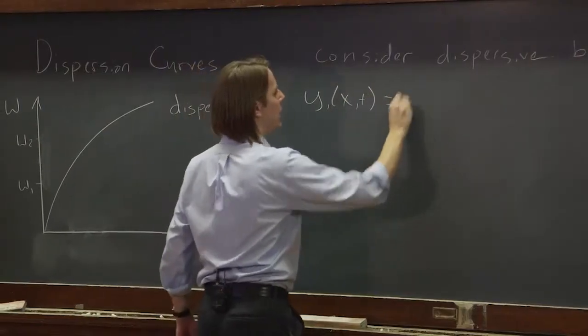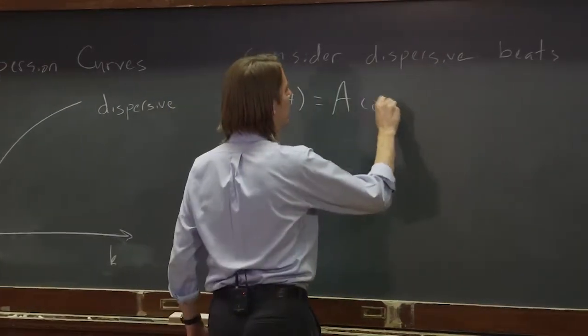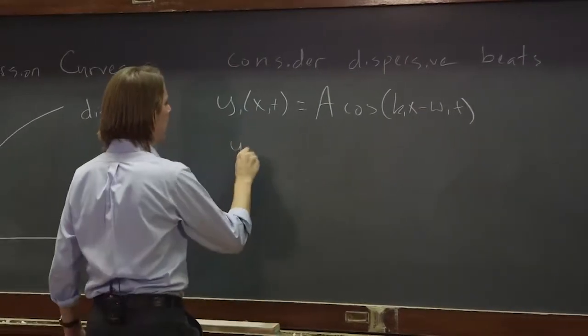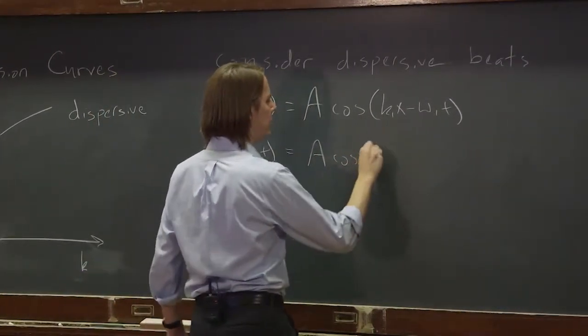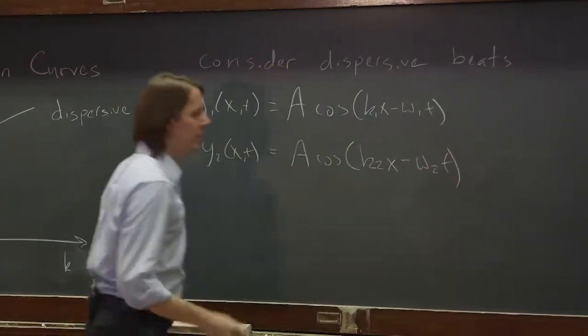Y1 of x and t is a cosine k1x minus omega 1t. And y2 of x and t is a cosine k2x minus omega 2t.